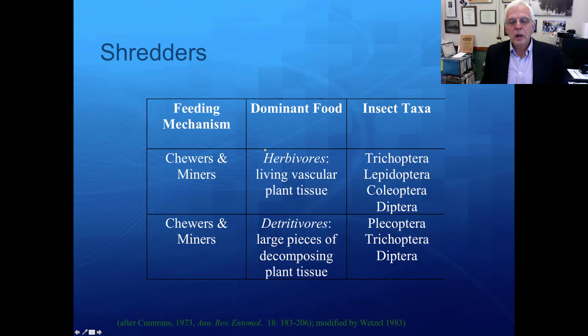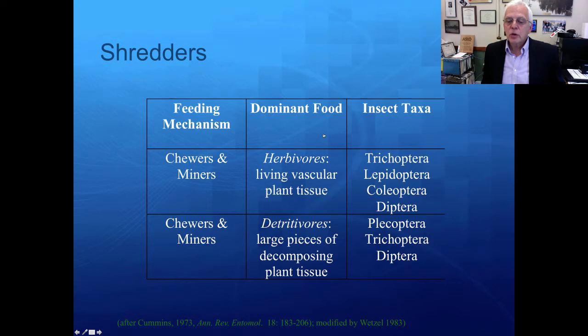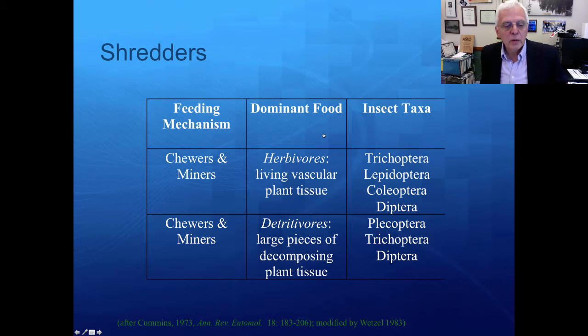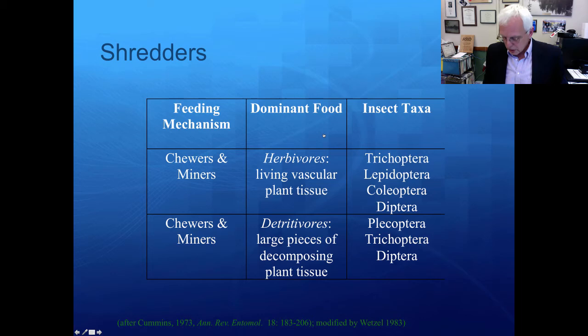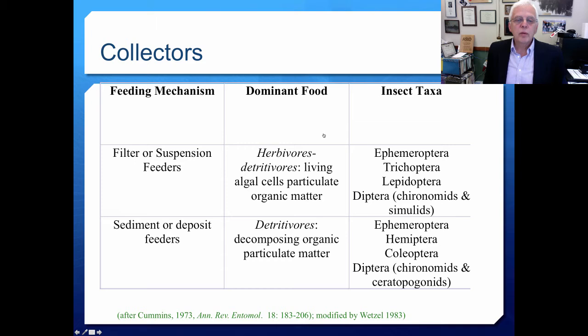Among the shredders there are chewers and miners. Herbivorous chewers and miners attack living vascular plant tissue, while detritivores take large pieces of decomposing plant tissue and tear them into bits. These are often the Trichoptera, Lepidoptera, Coleoptera, Diptera, and Plecoptera, which shred material and begin processing it so it can move downstream and become available to other organisms.